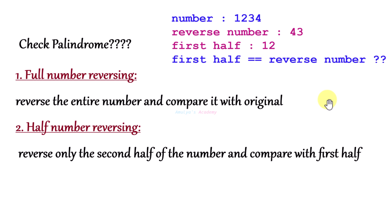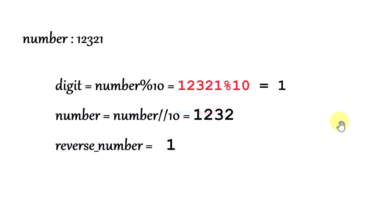We will reverse the second half of the number and compare it with the first half. If they are the same, then it is a palindrome number; if not, it is not a palindrome. If the number has an odd number of digits, we ignore the middle digit. Today we will use the half number reversing approach, and let's discuss this in more detail with examples.